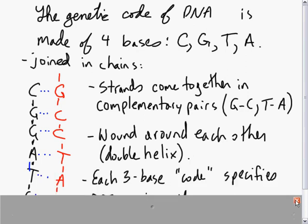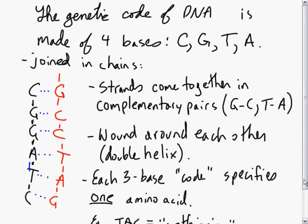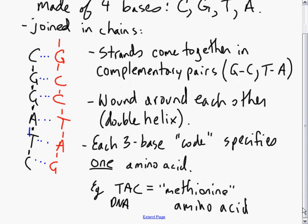And each three-base code specifies one amino acid. For example, the code TAC on DNA, in order, would code for the amino acid methionine once it's translated into RNA and then brought to the cytoplasm. Now, why is there a three-letter code?